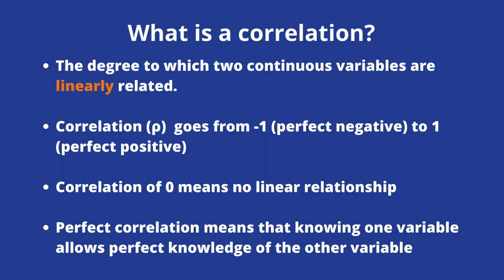What is a correlation? A correlation is the degree to which two continuous variables are linearly related. Correlation can go from minus 1 to plus 1, which is minus 1 a perfect negative and plus 1 a perfect positive. You need to keep in mind this word: linearly.